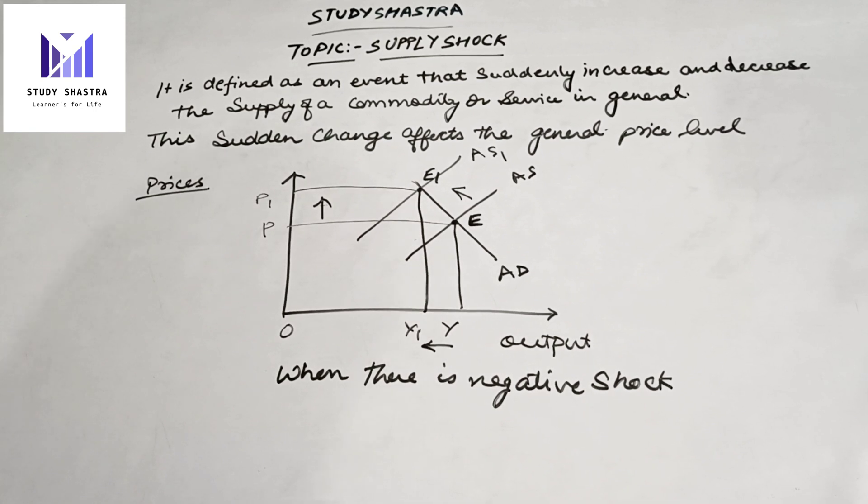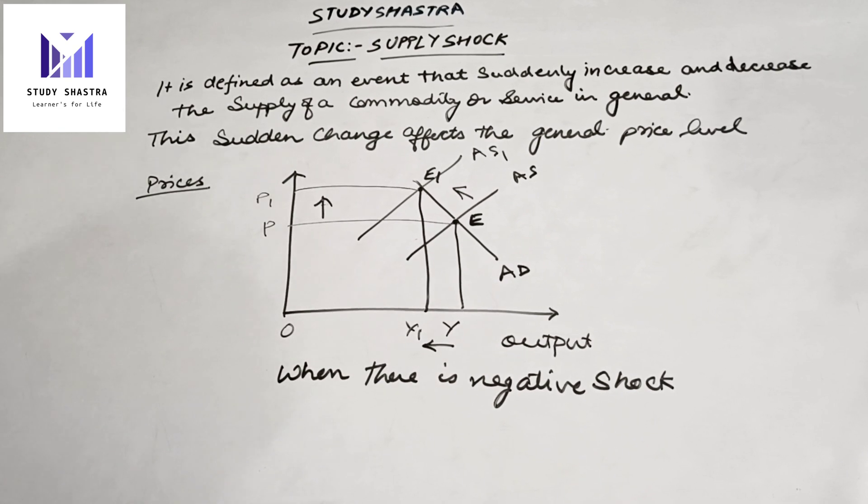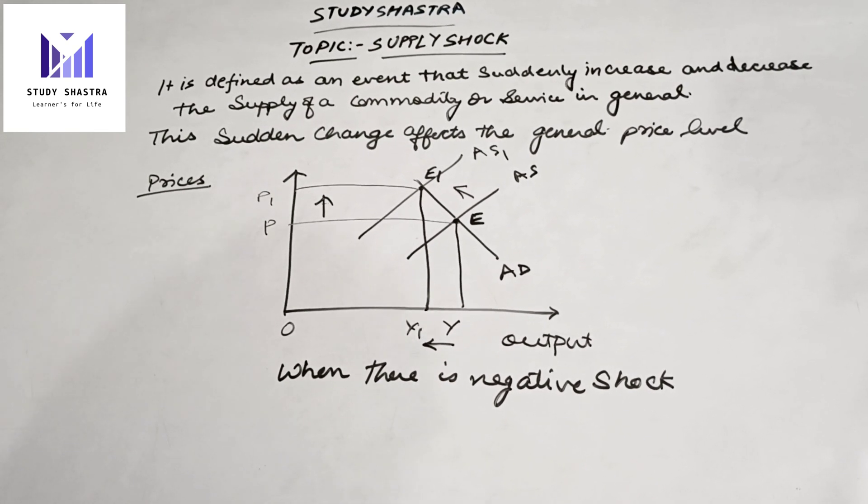Supply Shock is defined as an event that suddenly increases or decreases the supply of a commodity or service in general markets.